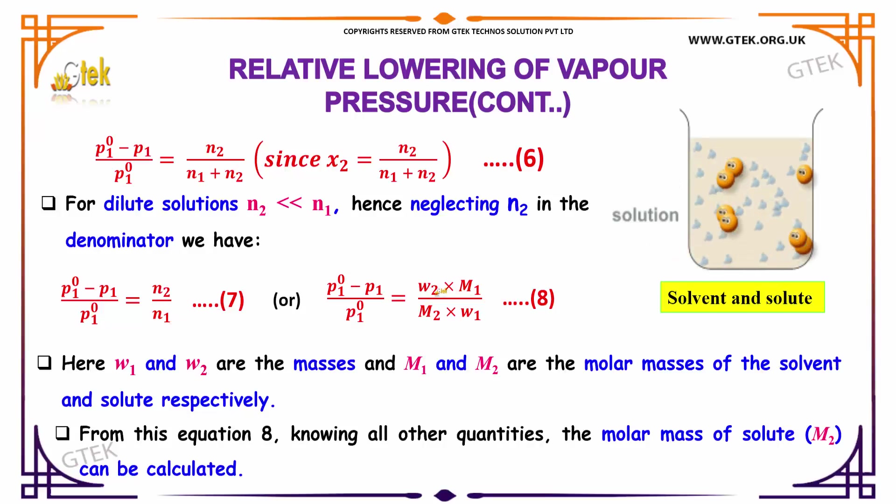It can be rewritten as W2 into M1 divided by M2 into W1, which indicates W1 and W2 are the masses and M1 and M2 are the molar masses of the solvent and solute respectively.